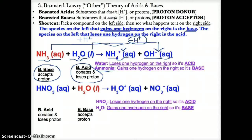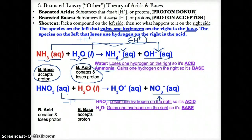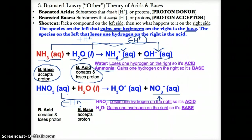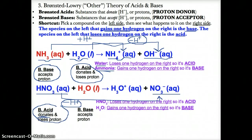Here we have HNO3 (aq) + H2O (l) → H3O+ (aq) + NO3- (aq). HNO3 (aq) has a similar species on the right written as NO3- (aq). What's happening is that you're losing one hydrogen ion — going from HNO3 to NO3-, you have one less hydrogen and the charge is one lower at minus one. Since HNO3 goes to NO3-, meaning it loses a hydrogen ion, it is the Bronsted acid — it donates one proton to become NO3-.